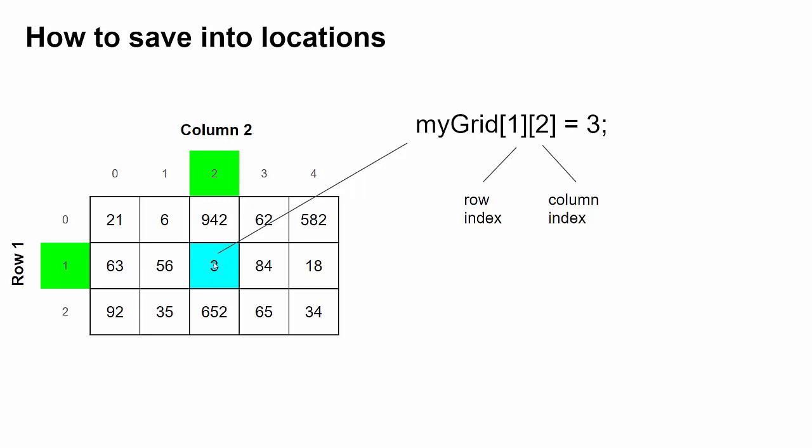This blue value here is at row one column two. Just like array lists, all of the location numbers, all of the indexes start at zero. So the columns go from zero to four, rows go from zero to two.